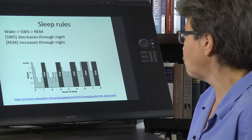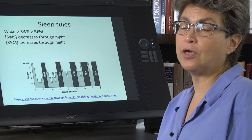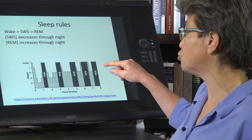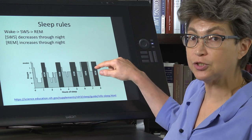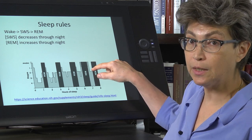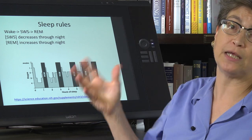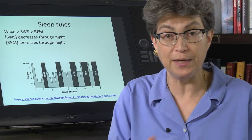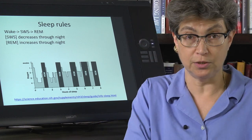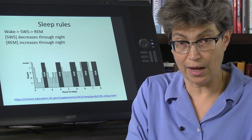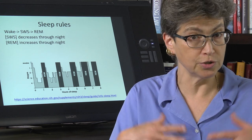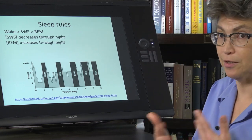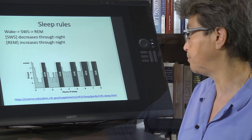One thing that can go wrong is narcolepsy: the entry from wakefulness directly into REM during the daytime. This is a forbidden transition — wake to REM — and it also occurs at a non-circadianly appropriate time.